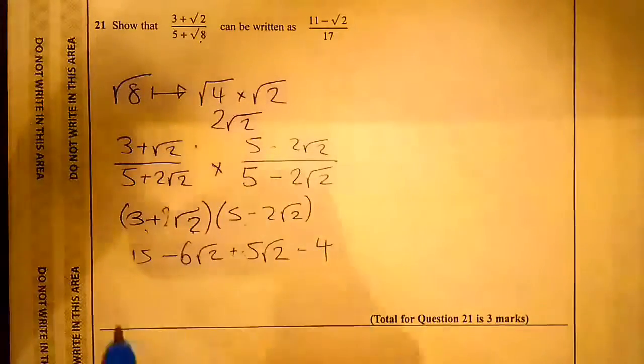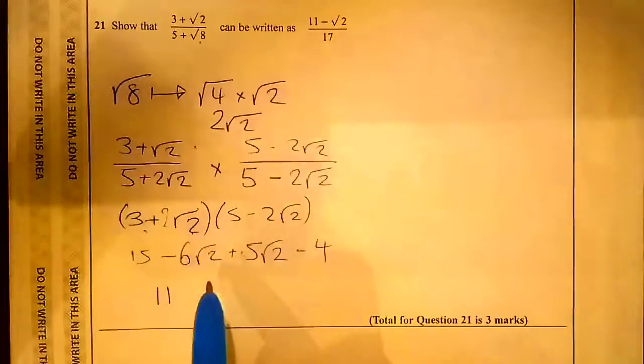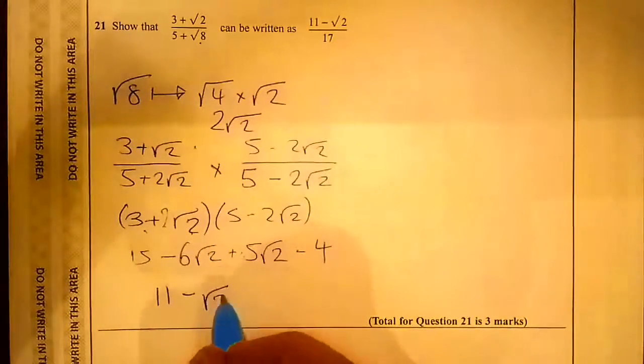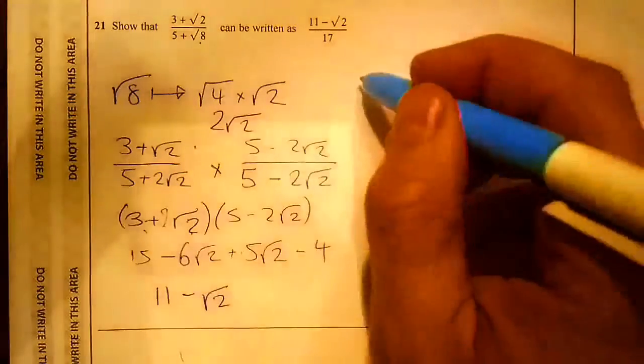15 minus 4 is 11, and -6√2 + 5√2 is -√2. So that's the numerator done: 11 - √2.